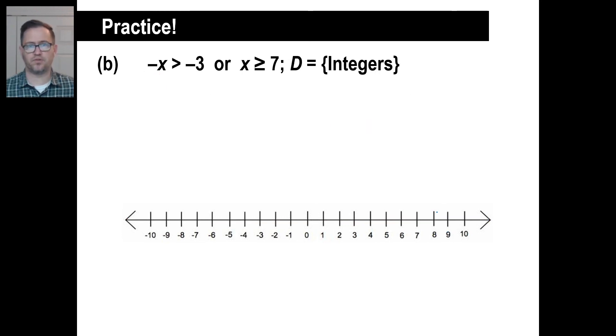All right. Let's try a b. Pause it and try a b. All right. This is a disjunction. Let's do this one first. It's simpler. We're allowed to use integers. Greater than or equal to 7. Well, it's going to be this. And so on. Okay. The second one, negative x is greater than negative 3.